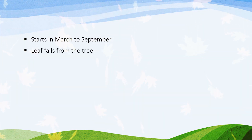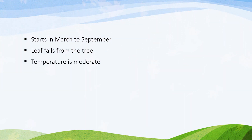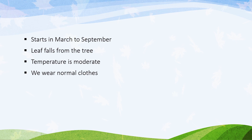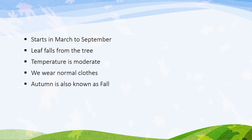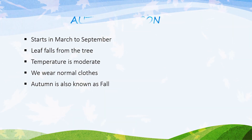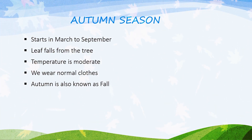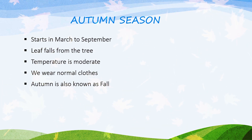Autumn starts in March to September. Leaves fall from the trees. Temperature is moderate. We wear normal clothes. Autumn is also known as fall.